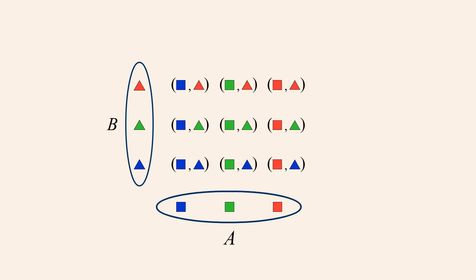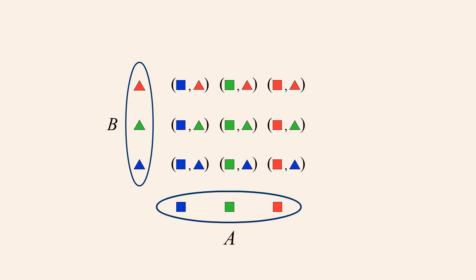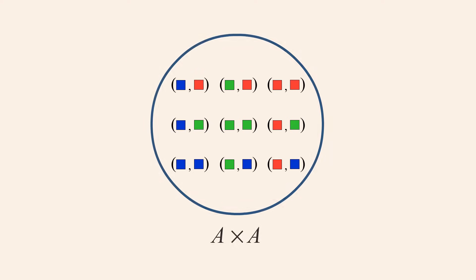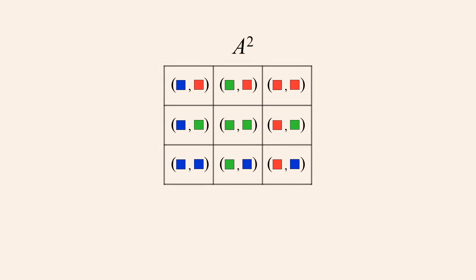It is not necessary for each operand of a Cartesian product to be a different set. For instance, we can form the Cartesian product of set A with itself. This can be written as the Cartesian product of A and A, or A squared. Just as before, we can locate any horizontal and vertical position within the grid by specifying the colors of each element.